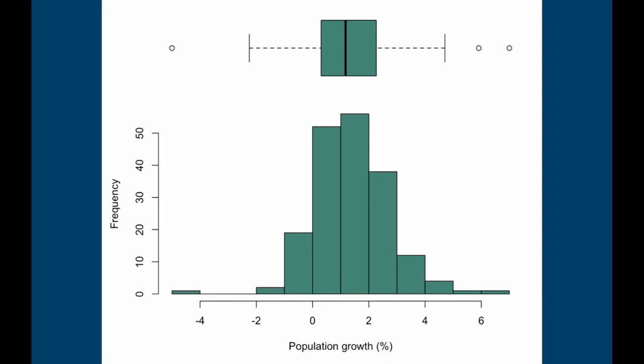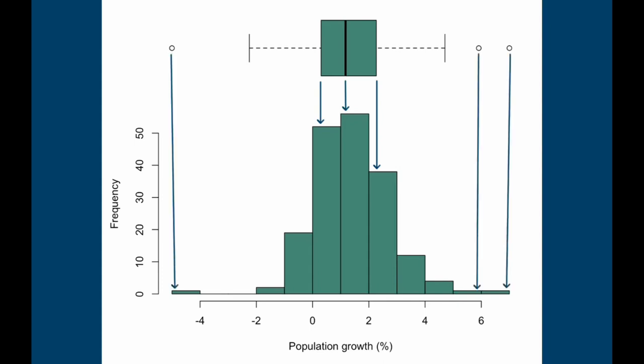So that's a box plot. We can flip it on its side and draw it above the frequency distribution we saw before. In this graph we have the same frequency distribution of population growth rates and the box plot drawn horizontally above it. You can see that the hinge with the median corresponds to the middle of the distribution, the box corresponds to the main chunk of data, the whiskers encompass almost all of the values, and the outliers correspond to individual data points at the extreme ends of the normal distribution.